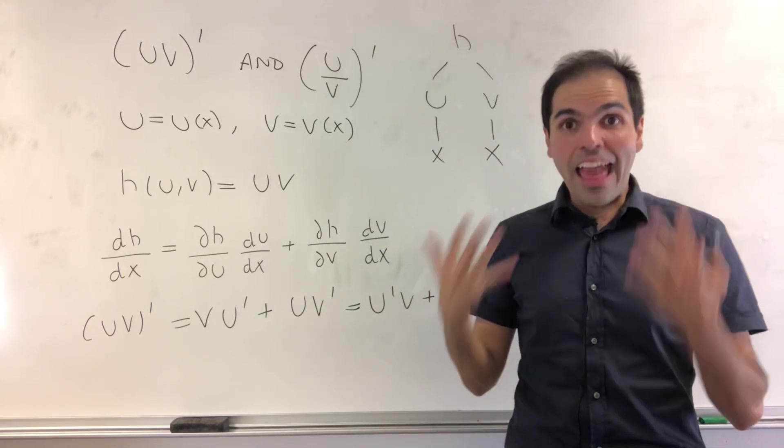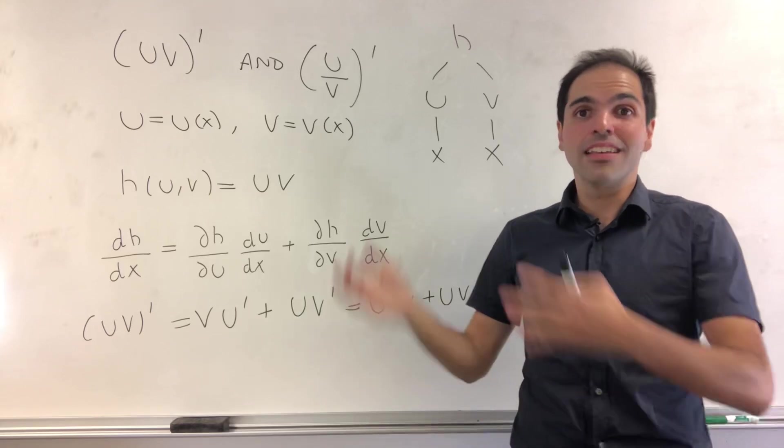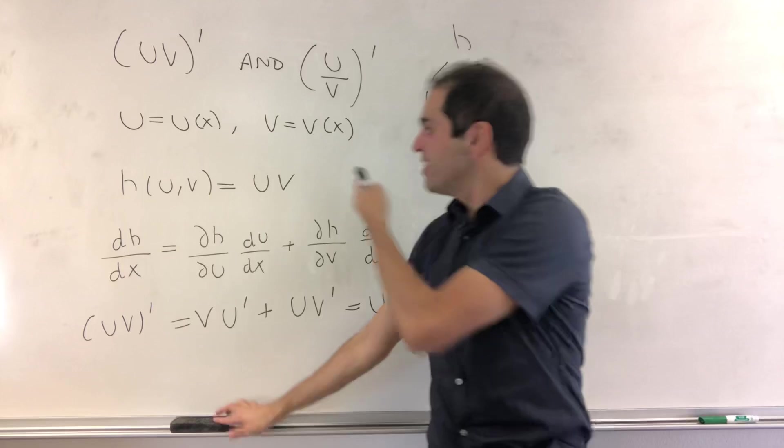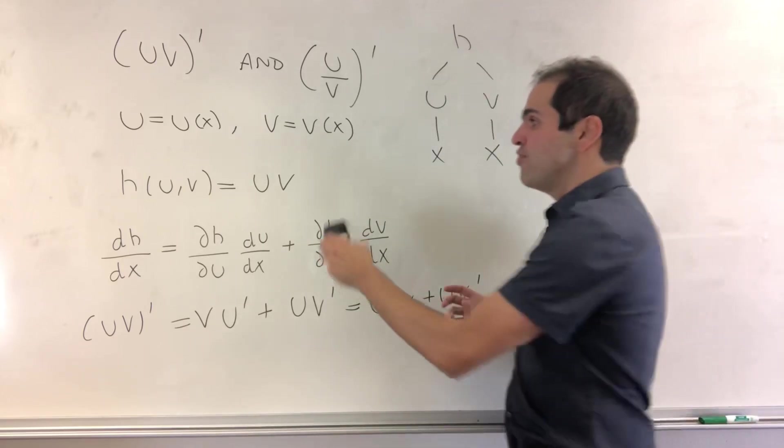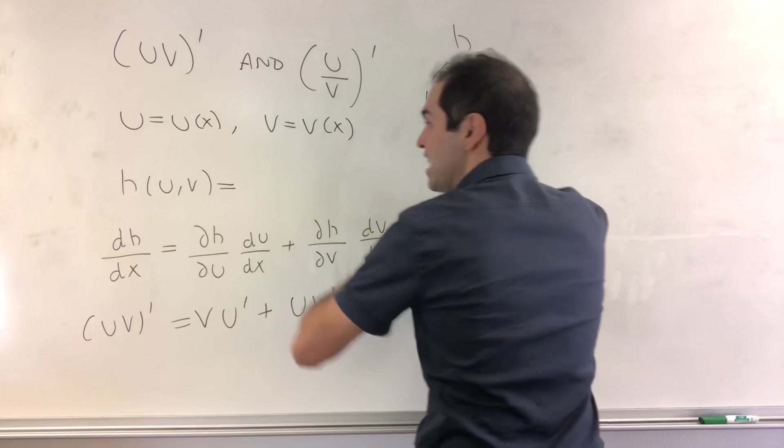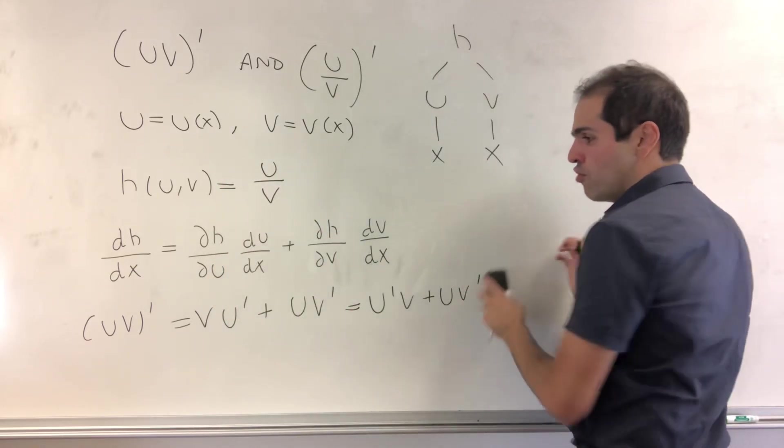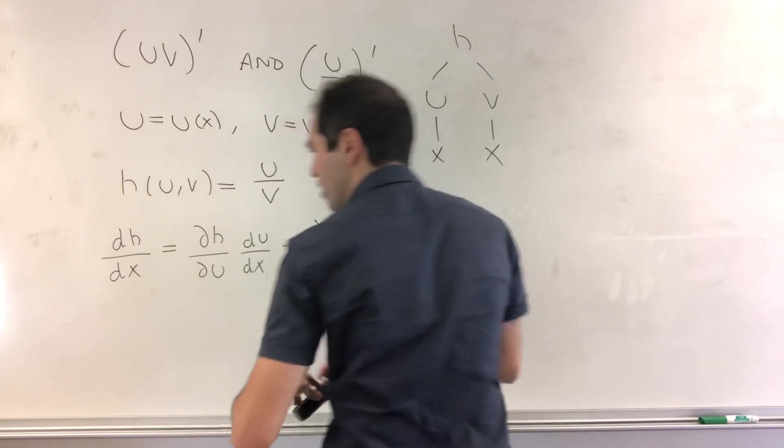How cool is that? And the beautiful thing is the same technique works for the quotient rule. The only difference is before we had uv, now we just have h be u over v. Then again, this formula stays the same, and what do we get?